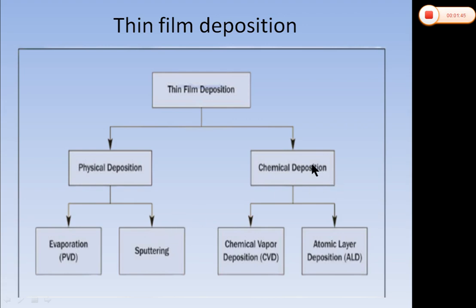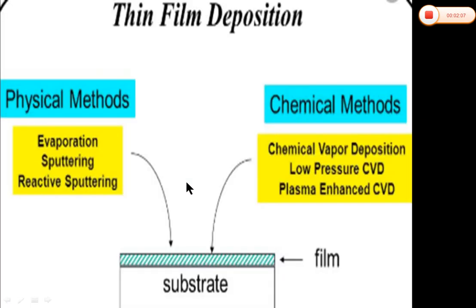The other type is chemical deposition. There are two types of chemical deposition: chemical vapor deposition, known as CVD, and atomic layer deposition, known as ALD. Today our topic is sputtering, which we will discuss further. This is an overview of the thin film deposition.